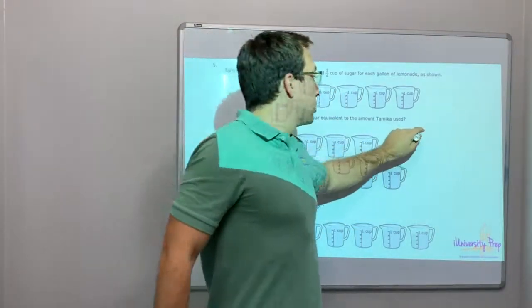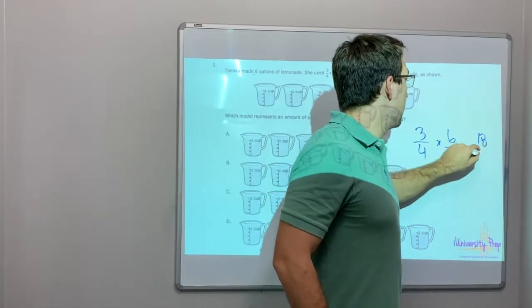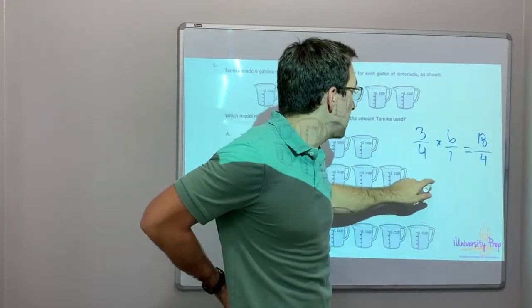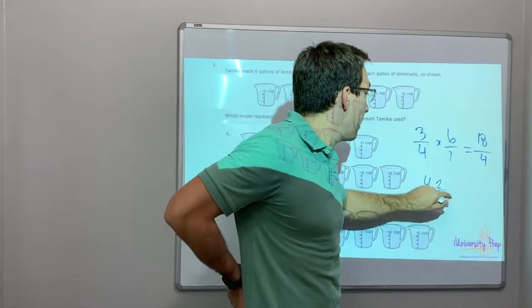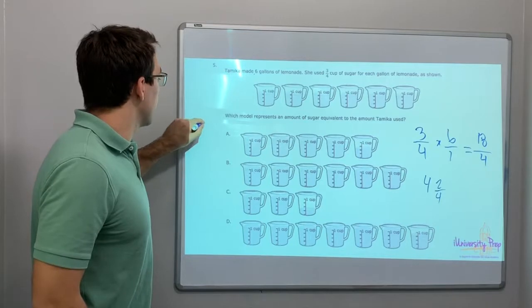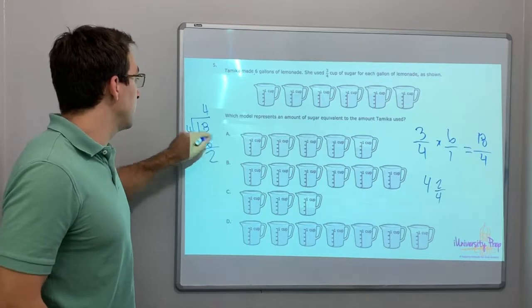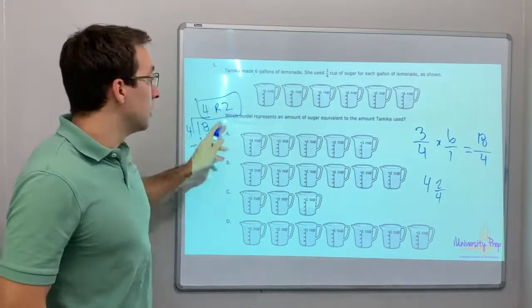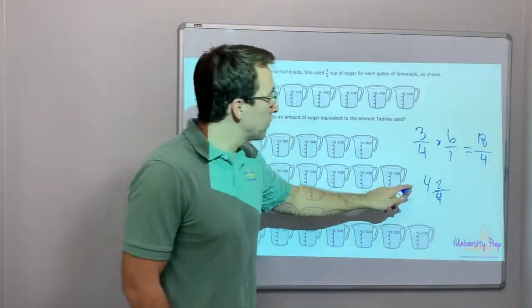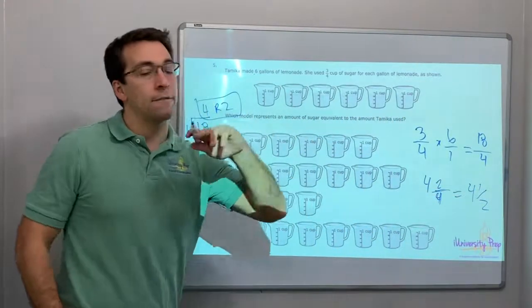Six times three-quarters. So three-quarters times six over one equals eighteen over four. What's eighteen divided by four? Four times four is sixteen. So four, remainder of two. Eighteen divided by four. Four times four is sixteen. Minus two, remainder two. Four, remainder two. So, we have four, remainder two. And we keep our denominator. What is four and two-quarters? Equals four and one-half. Four and a half is our answer.